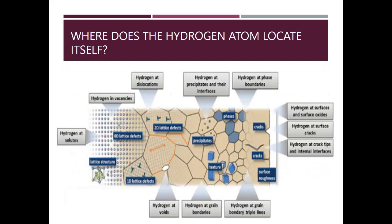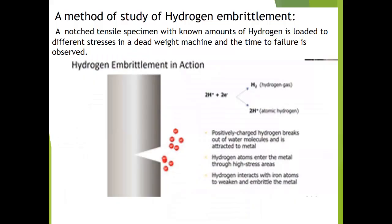Hydrogen is also introduced during the cathodic reaction of corrosion. Hydrogen atoms locate themselves in vacancies, at dislocation sites, at precipitates and their interfaces, at phase boundaries, at surfaces and surface oxides, at surface cracks, at crack tips, at voids, at grain boundaries, and at grain boundary triple points.